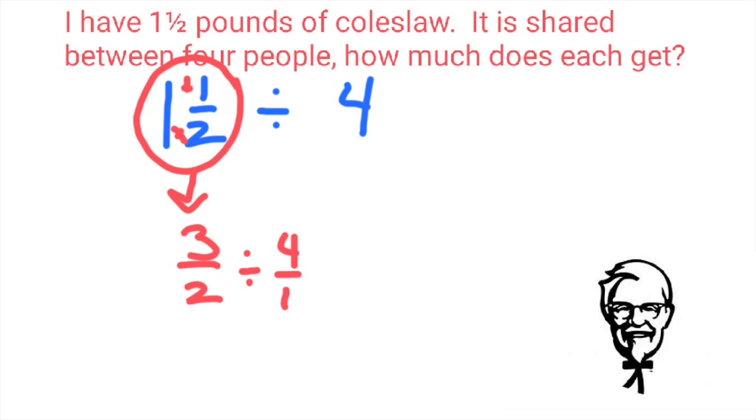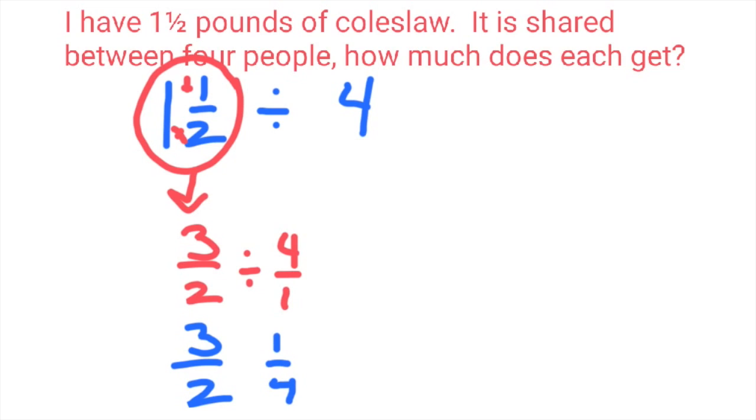Now we're ready to divide. This is the colonel speaking. Make sure you use KFC to divide fractions. Keep the first one, flip the second one, change divide to multiply. And you'll find out that each person is going to get 3⅛ pounds of coleslaw.